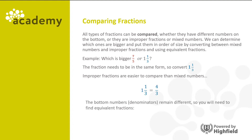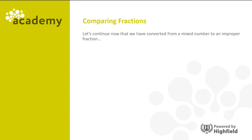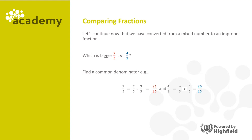The bottom numbers still differ, so we need equivalent fractions. We're comparing seven fifths and four thirds. Starting with seven fifths, we multiply the denominator by 3 and the numerator by 3, giving us 21 fifteenths. With four thirds, we multiply the denominator by 5 and the numerator by 5, giving us 20 fifteenths. You can see quite clearly that 21 is bigger than 20, so seven fifths is just bigger than one and one third.